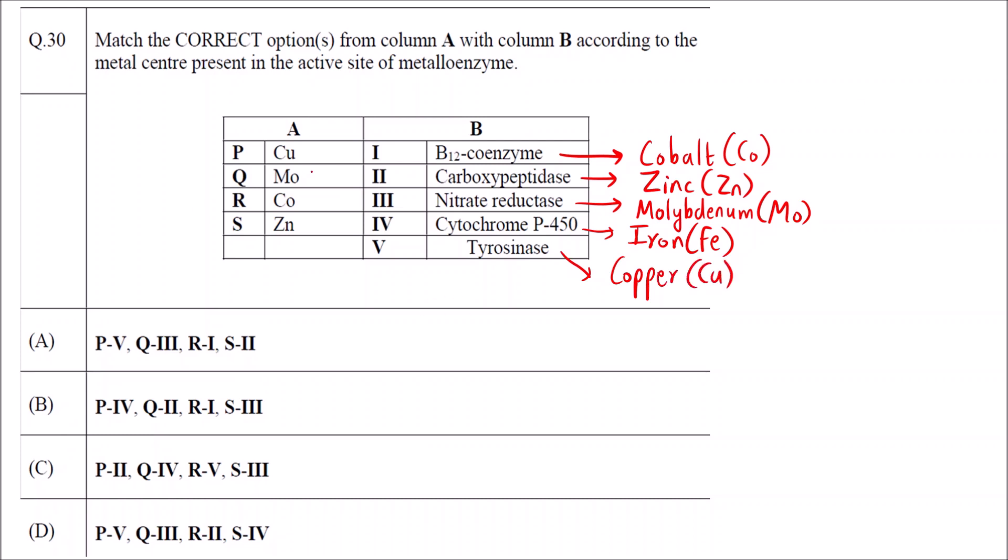Based on the answers we can match now. P copper is present in tyrosinase. Q molybdenum is present in nitrate reductase, that is 3. R cobalt is present in B12 coenzyme. S zinc is present in carboxypeptidase. So 5, 3, 1, 2. The correct answer is option A.